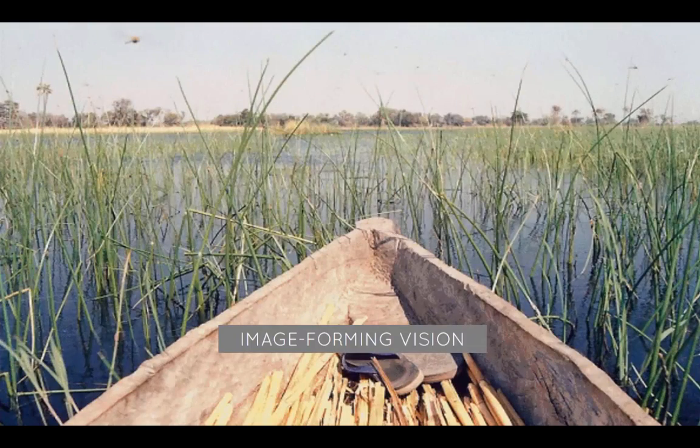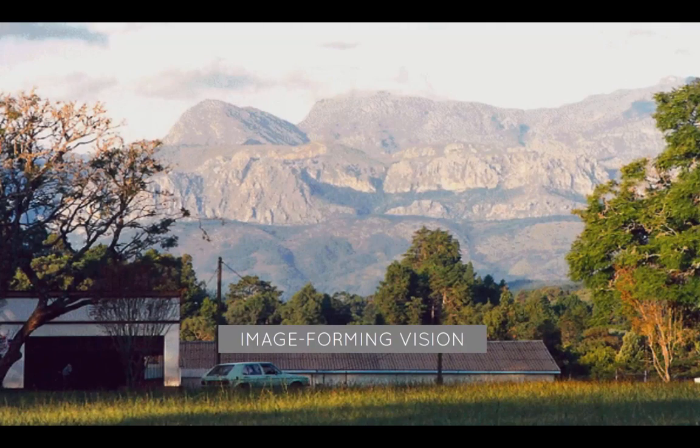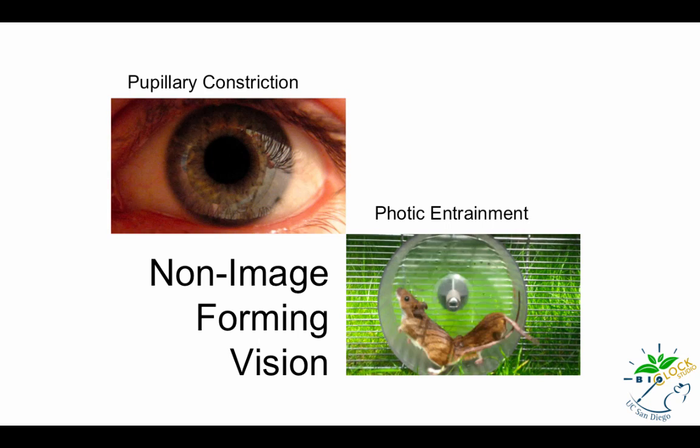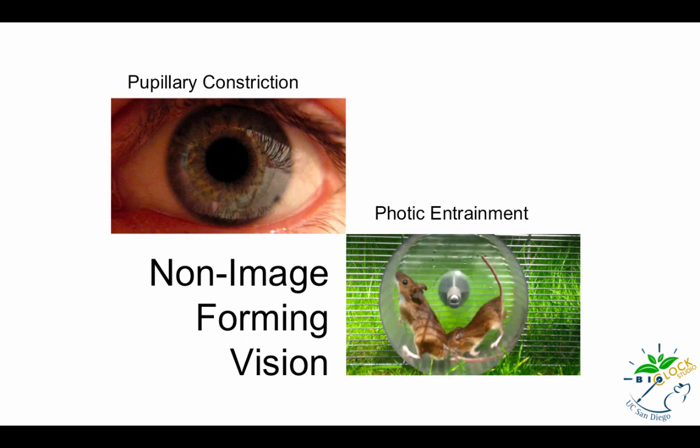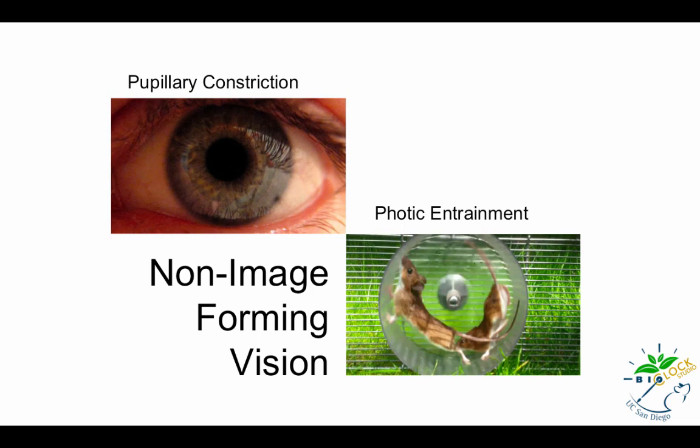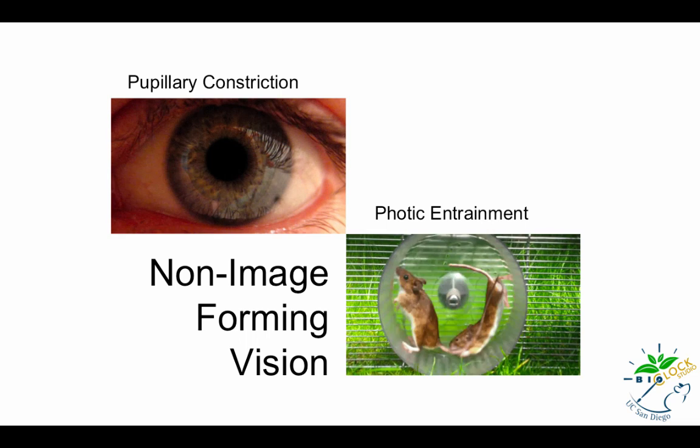However, the retina is also responsible for other functions that do not involve image formation. This function is called non-image-forming vision. Pupillary constriction, which controls the amount of light entering the eye, as well as photic entrainment of circadian rhythms, are both types of non-image-forming functions.